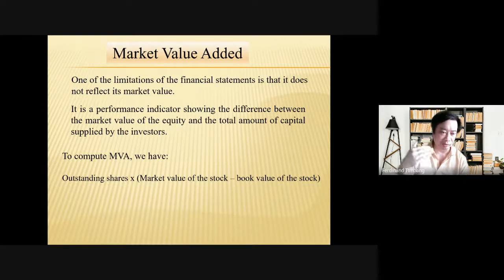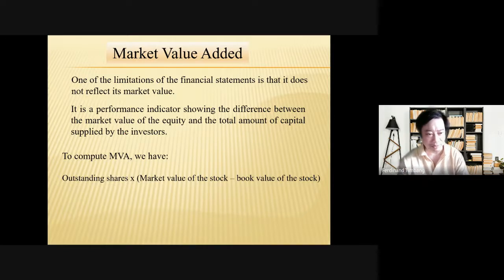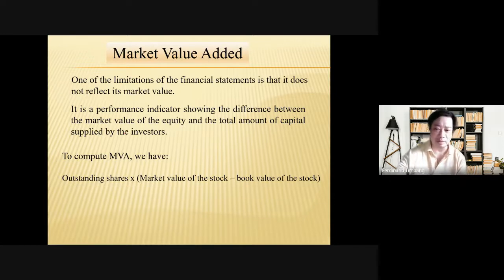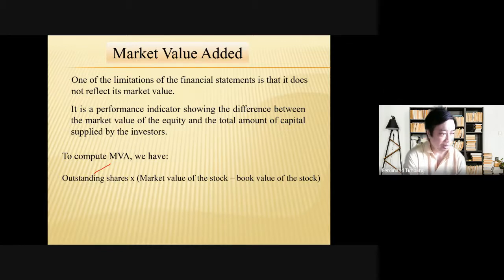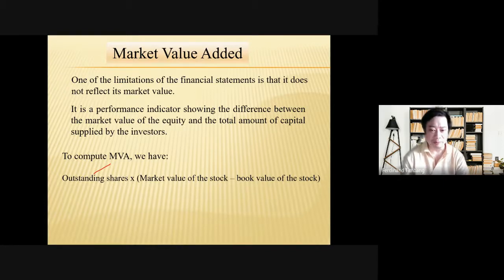Market Value Added is a performance indicator showing the difference between the market value of the equity and the total amount of capital supplied by investors. Based on this we can see the progress or increase in the market value of the company. The formula is: (market value of the stock minus book value of the stock) multiplied by the number of outstanding shares. Outstanding shares are shares issued by the company and already paid.